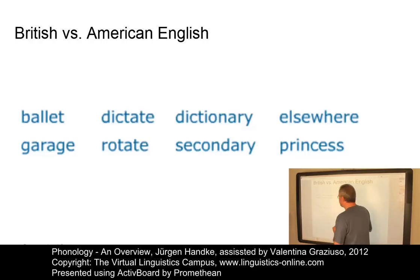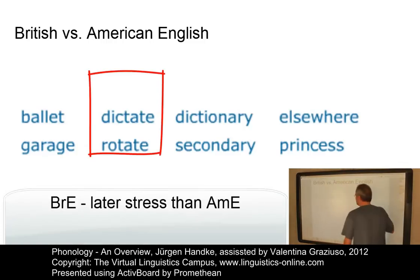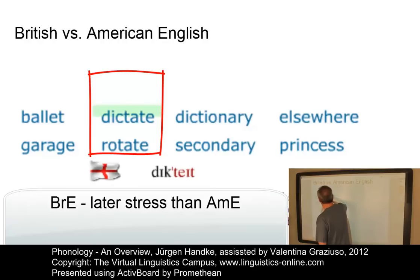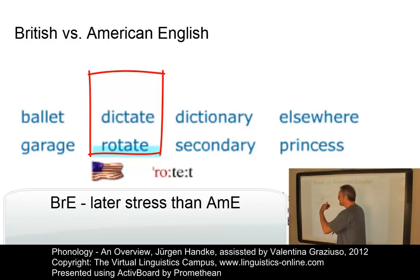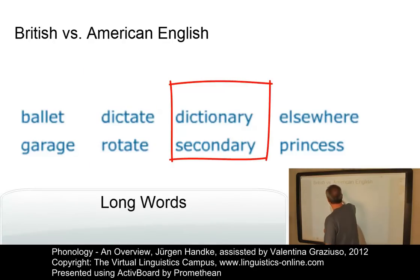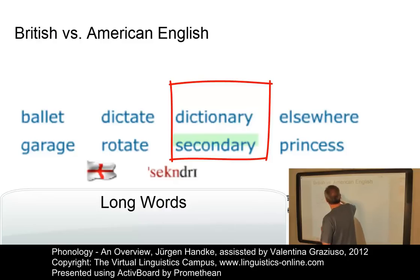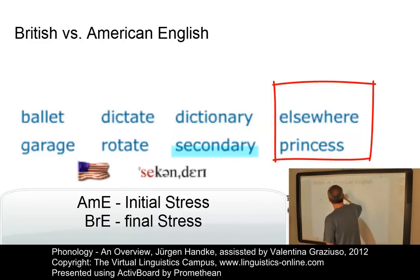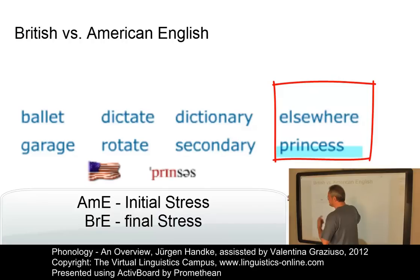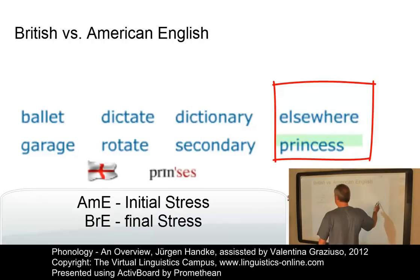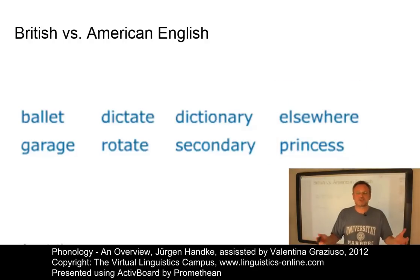Further differences concern the placement of stress in polysyllabic words. In British English: 'dictate,' 'rotate'; in American English: 'dictate,' 'rotate' — we have later stress in British English for these words. For four-syllable words, British English gives 'dictionary,' 'secondary' with one stress, while American English has at least an additional secondary stress: 'DICTionary,' 'SECondary.' Finally, American English uses initial stress — 'ELsewhere,' 'PRINcess' — whereas British English uses final stress: 'elsWHERE,' 'prinCESS.' These examples summarize the main suprasegmental phonological differences between British and American English.